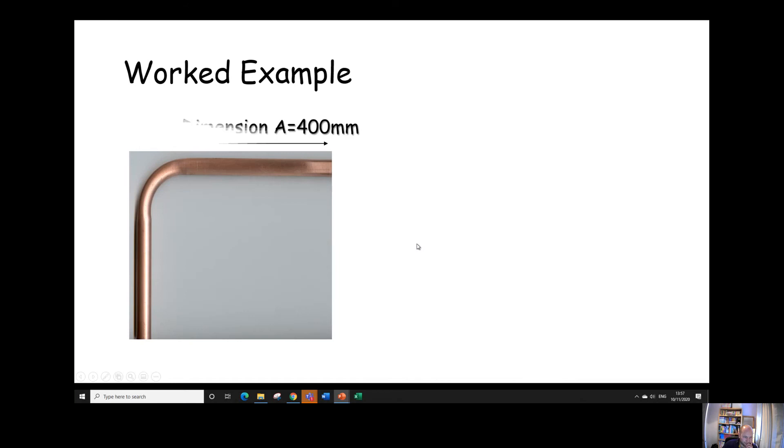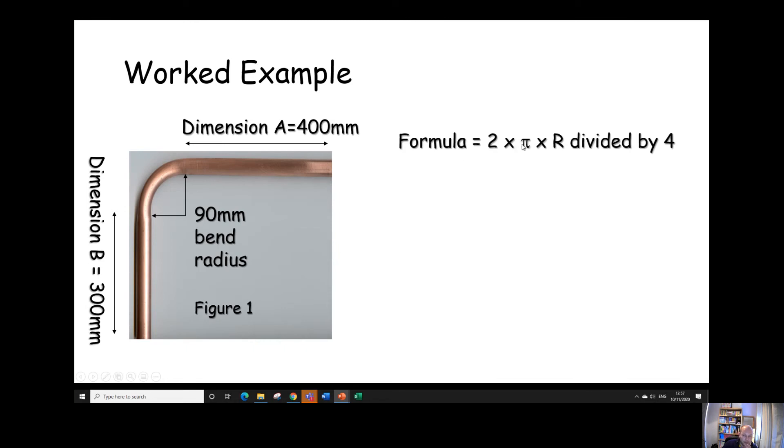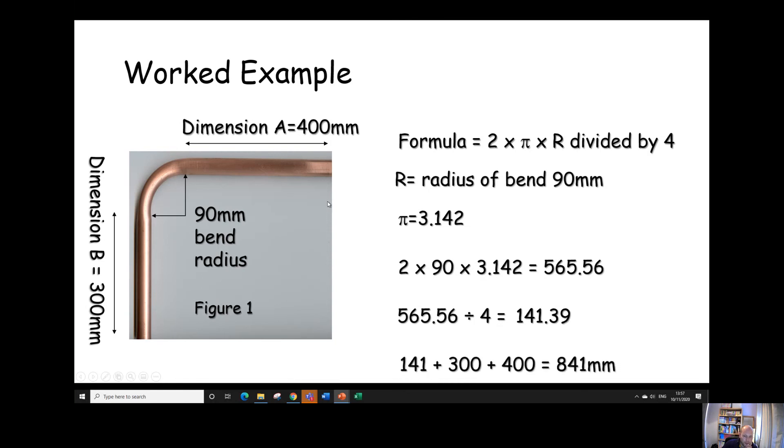So we've got a worked example here. So dimension A is 400 mil, dimension B is 300 mil, 90 mil radius of the bend. So 2 times pi times the radius and divided by 4 is 2 times 90 times 3.142, which gives us a total circumference of 565.56 millimetres. We'd divide that by 4, which would give us a total length of 141.39 millimetres. So we'd add that 141 to these other sizes here, 400 and 300, which would give us a total of 841 millimetres total length of bend.